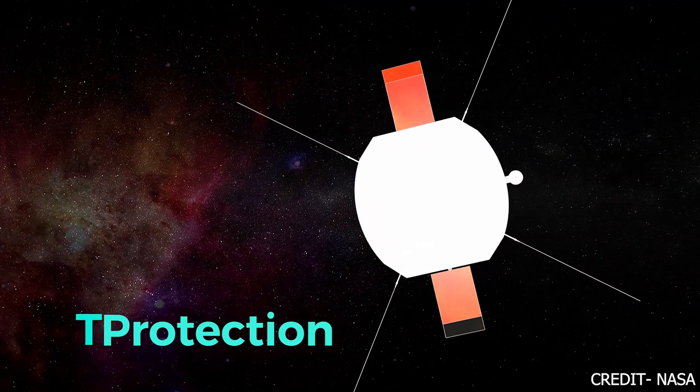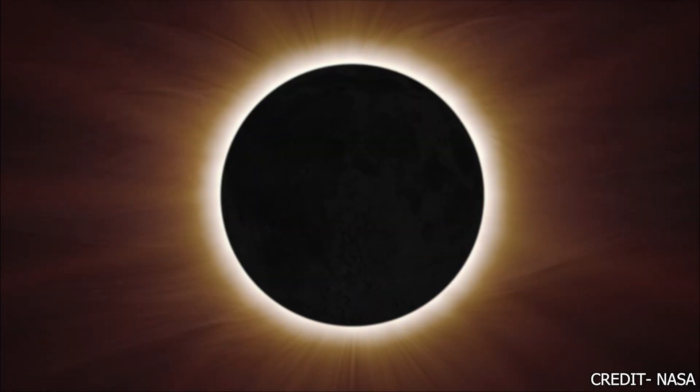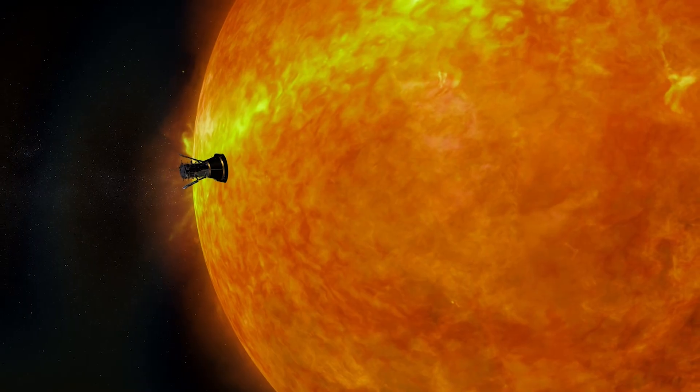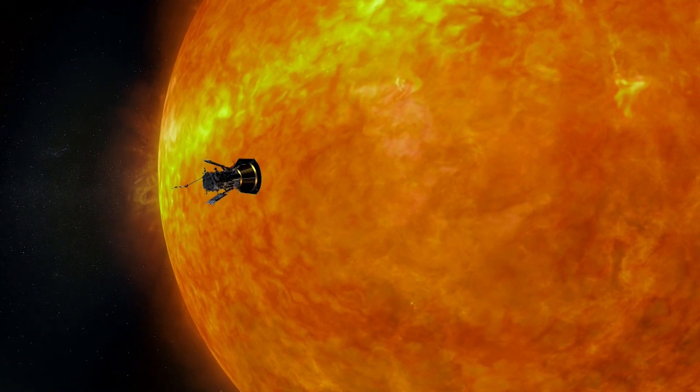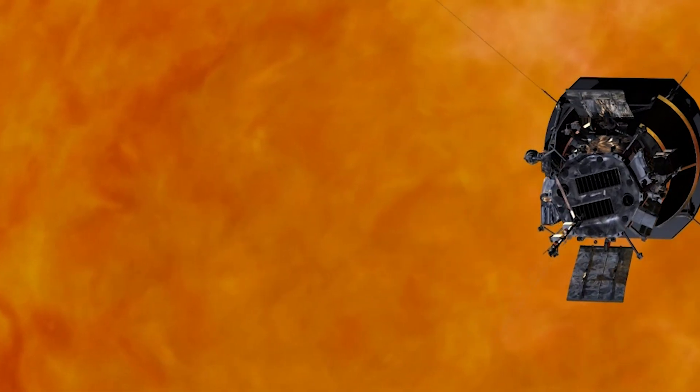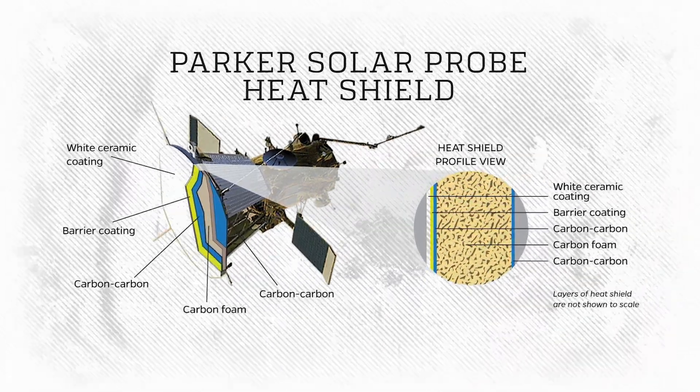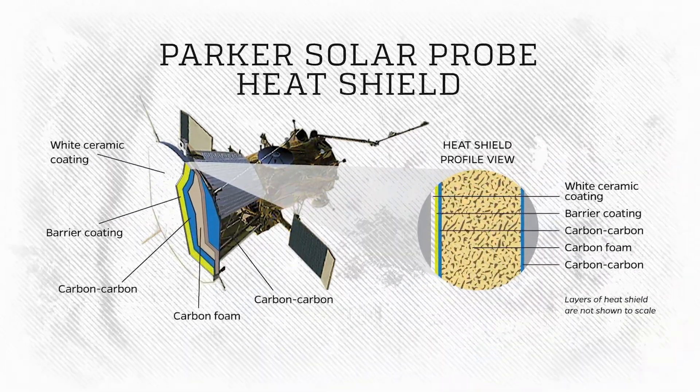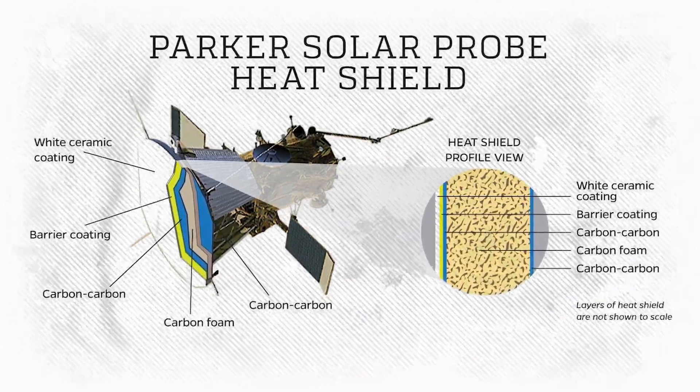The Thermal Protection System, TPS, of the Parker Solar Probe plays a critical role in ensuring the spacecraft's survival in the harsh environment near the sun. The TPS consists of a carbon-composite foam shield that is attached between two carbon plates, providing extra protection.